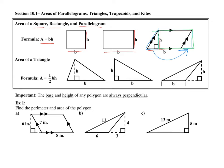Then we have the area of a triangle formula: half base times height. Got to be careful with this triangle here — the base is the actual bottom part of the triangle, and the height always goes from the highest point straight down. It has to be perpendicular to this horizontal line here. Very important: the base and height of any polygon are always perpendicular.